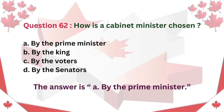Question 62. How is a cabinet minister chosen? A. By the prime minister B. By the king C. By the voters D. By the senators. The answer is A. By the prime minister.